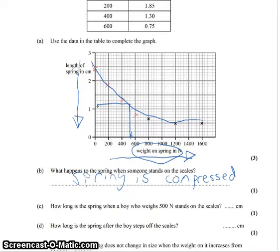Okay, now my best fit line wasn't particularly good, but we're looking here at somewhere in the region of 1.2 centimeters from my graph. Now, obviously you have to go by your own graph here, but you need to draw a line up from 500 Newtons until you hit your curve and then across to give you your length.